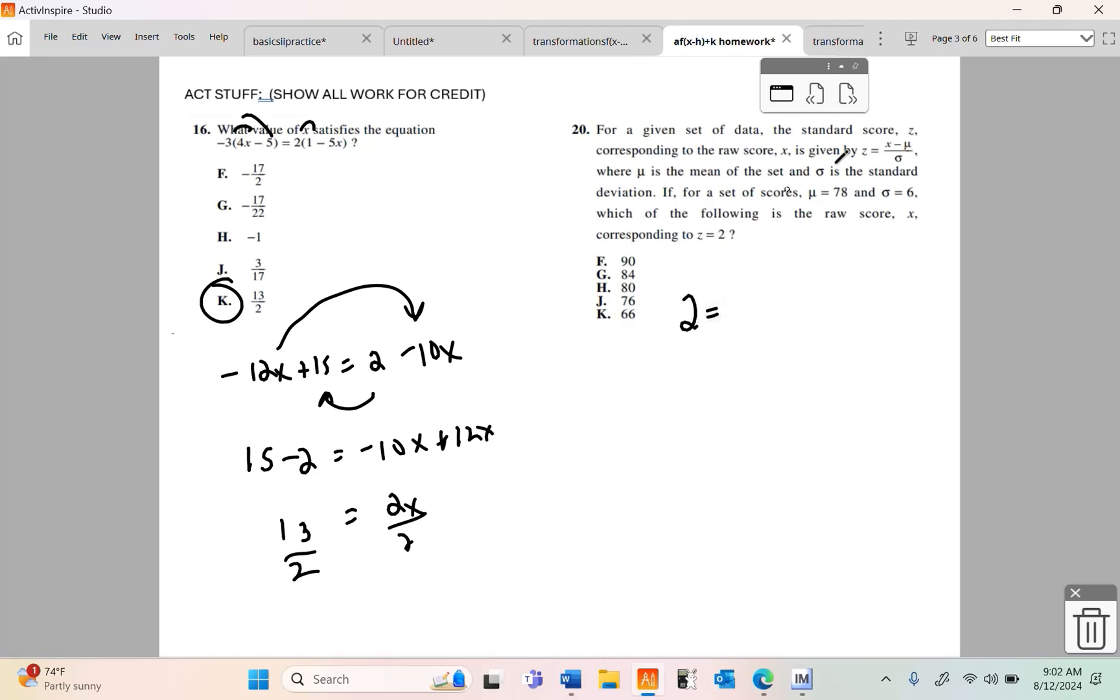20 is something we'll do probably around maybe February or March of next year. We do some statistics in this class. So, they give us a formula where all we have to do is plug stuff in. It says, for a given set of data, the standard score z corresponding to the raw score x is given by z is x minus, this Greek letter here, mu, over standard deviation, which is sigma. If for a set of scores, mu is 78, mu means mean, it means average, and standard deviation sigma is 6, which of the following is the raw score corresponding to z equals 2.